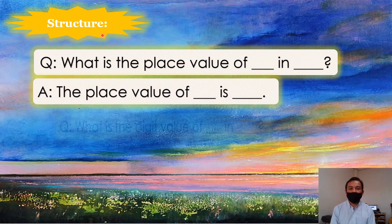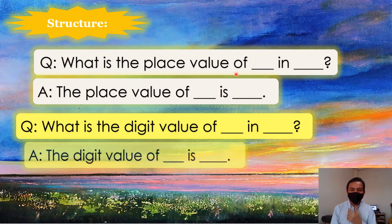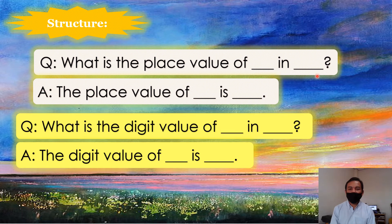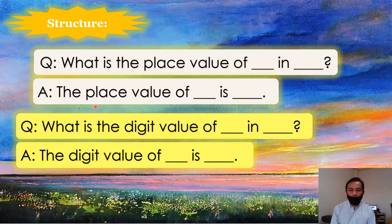Here's our structure. What is the place value of blank in blank? What is the place value of blank in blank? Answer: The place value of blank is blank. Again, the place value of blank is blank.